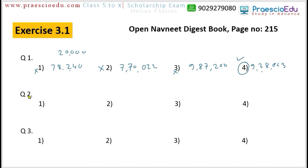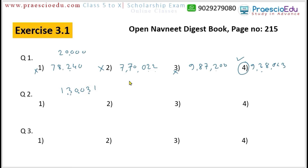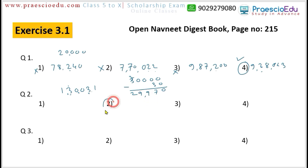Question 2: What is the difference between the place values of the digit 3 in the number 1,30,031? There are two 3s in this number — one is at the ten-thousands place (place value 30,000) and one is at the tens place (place value 30). The difference is 30,000 minus 30, which gives 29,970. This is available in option number 2.